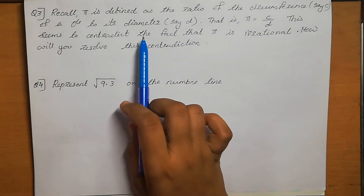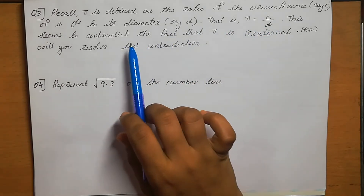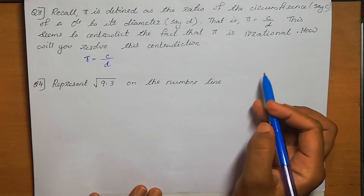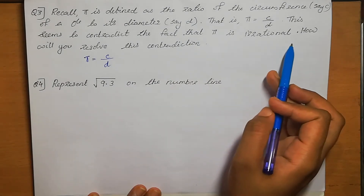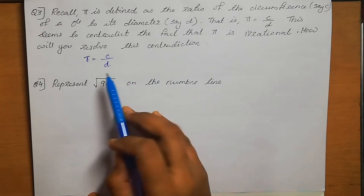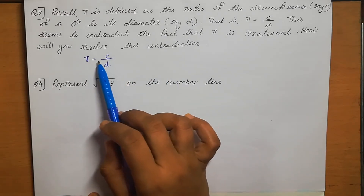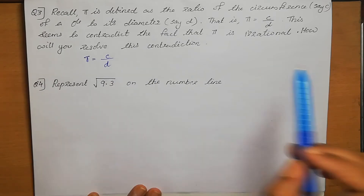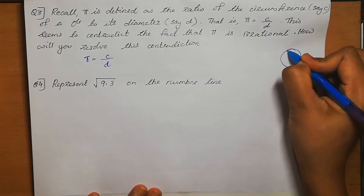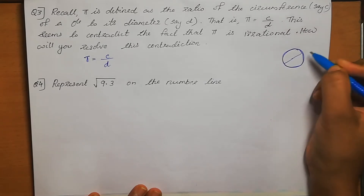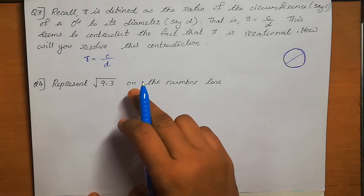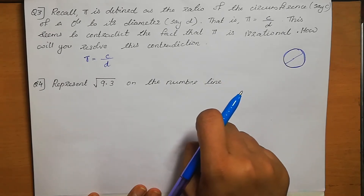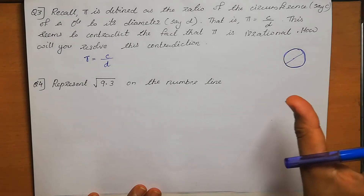Question number 3: Recall that π is defined as the ratio of the circumference of a circle to its diameter, meaning π equals C by D. This seemed to contradict the fact that π is irrational. We know π is an irrational number. When expressed as C by D, C is the circumference and D is the diameter. If P and Q are integers and Q is not equal to 0, π would appear rational — but it is not certain that the circumference is always an integer.